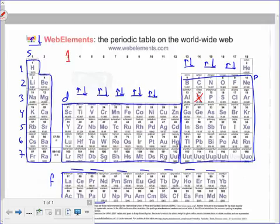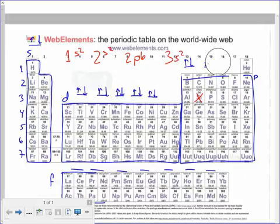1s². 2s². 2p⁶. And I go to 3s². Let me erase this over here to make more space. 3s². And then I end up with 3p². 3p².